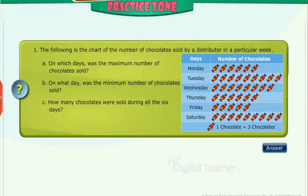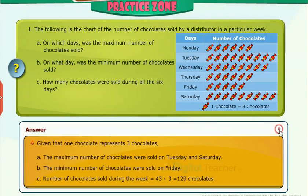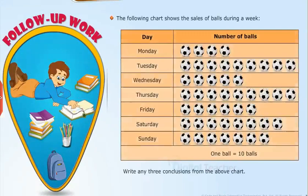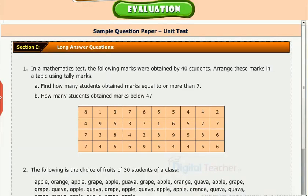Try to solve the problems in the practice zone on your own. The following chart shows the sales of balls during a week. Write any three conclusions from the above chart. Test your understanding of the chapter by taking the mock unit test.